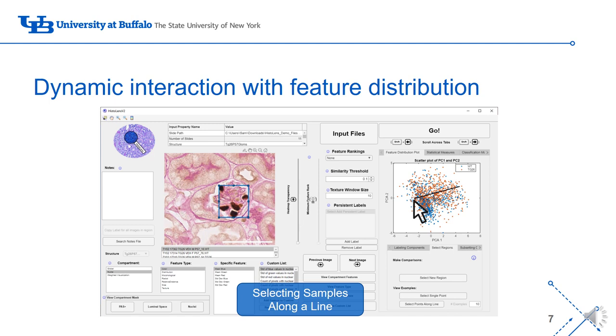To assess the gradient and qualitative image characteristics across this range, a line ROI is drawn and images are pulled off the scatterplot at equidistant points.